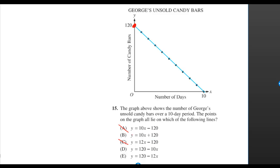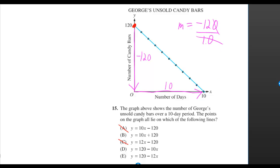So now it must be B, D, or E. We're going down by 120 and to the right by 10, so our rise over run is negative 120 over 10. That simplifies to negative 12, so we're looking for something with a slope of negative 12.